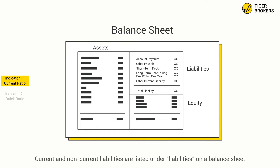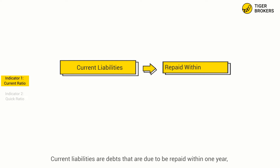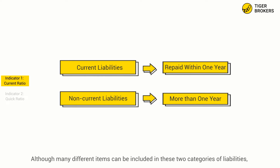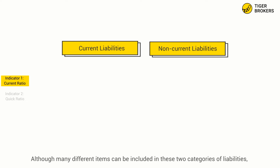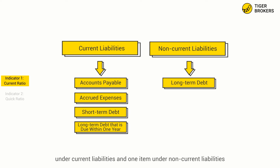Current and non-current liabilities are listed under liabilities on a balance sheet. Current liabilities are debts that are due to be repaid within one year, and non-current liabilities are debts that are due in more than one year. Although many different items can be included in these two categories, at Tiger Academy we think we mainly need to focus on four particular items under current liabilities and one item under non-current liabilities. Now let's take a look at those items in detail.